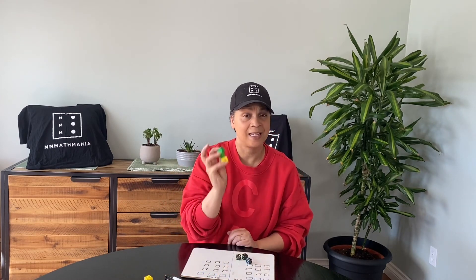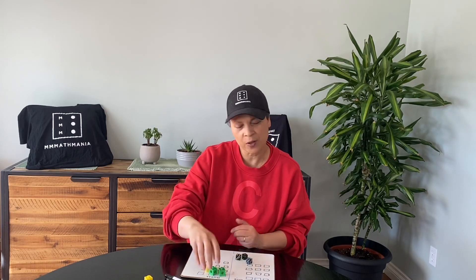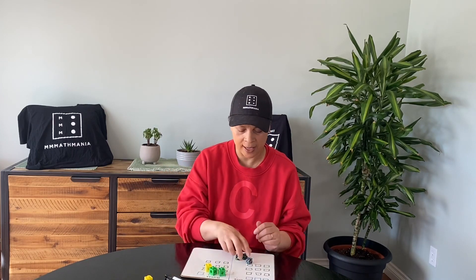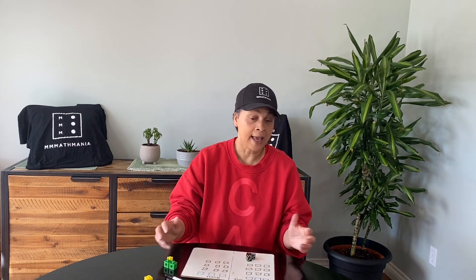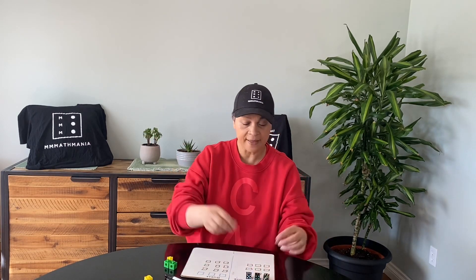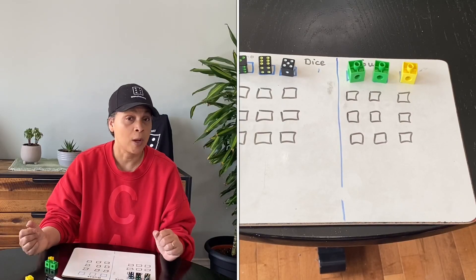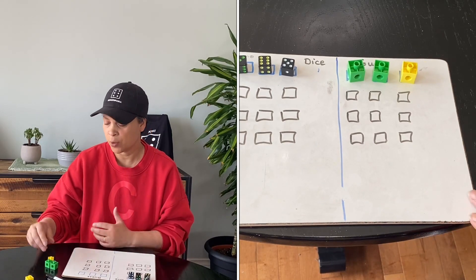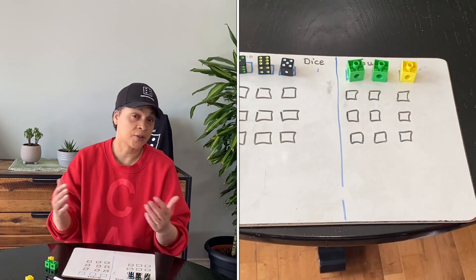What you're going to need are three sets of dice. I've got green and yellow just because it's based on Wordle and that's what they use, but you could choose two different colors. Basically, the first player rolls three sets of dice, arranges them in an order, and then tells their partner how many are even and how many are odd.